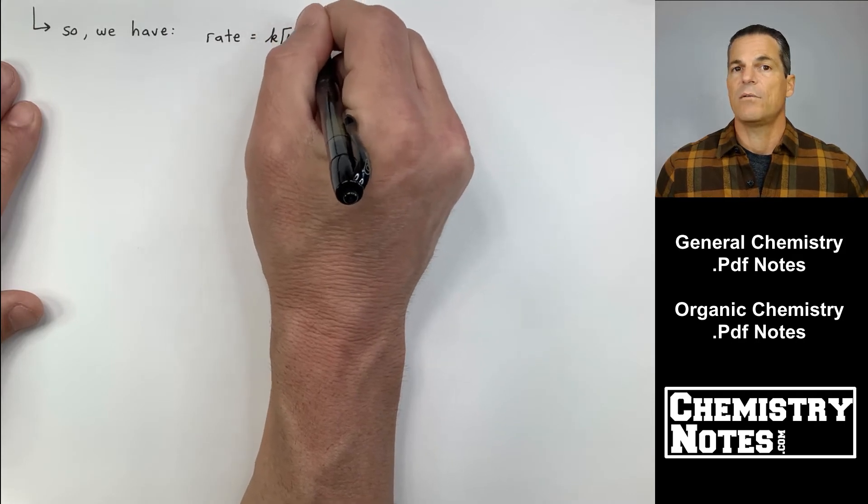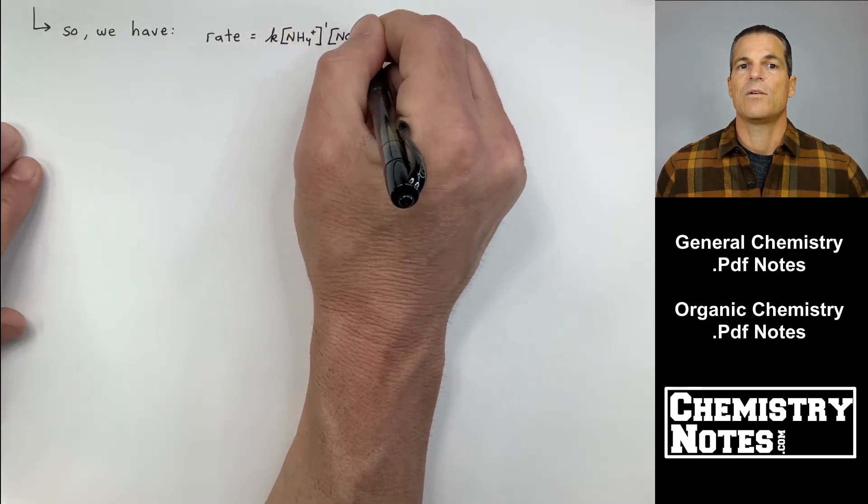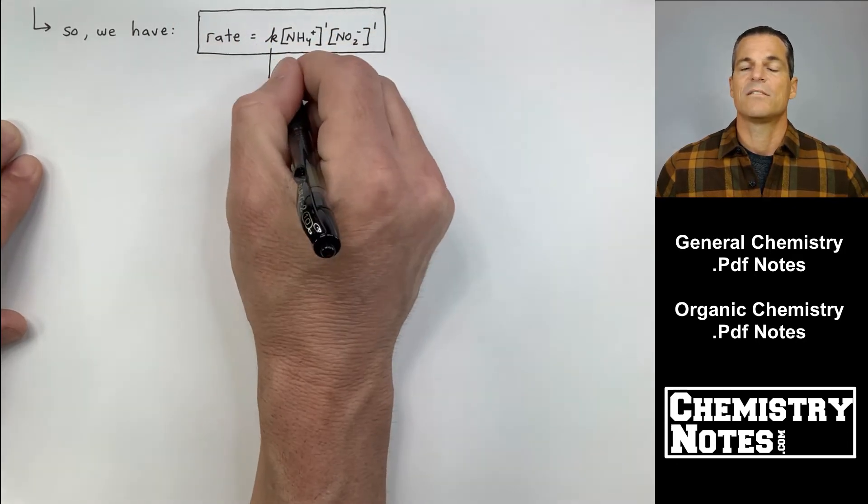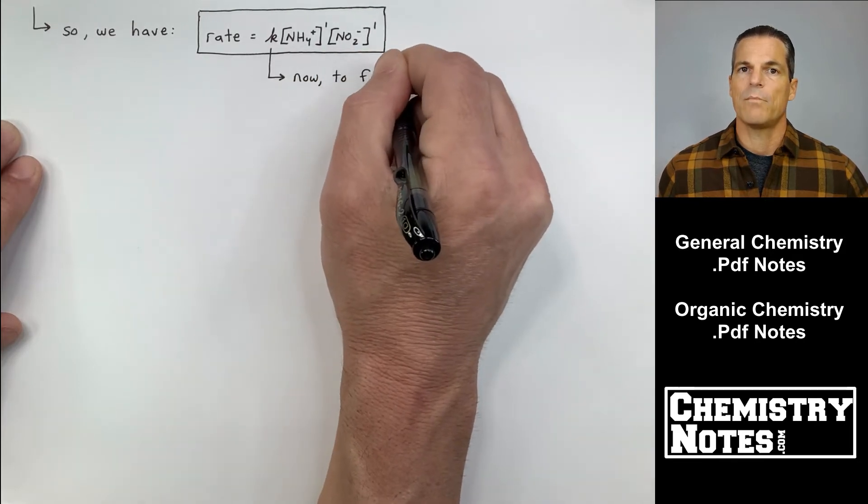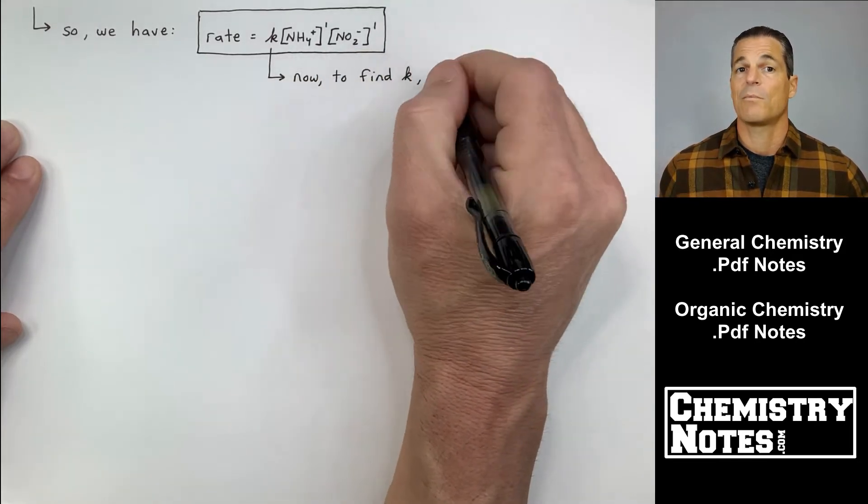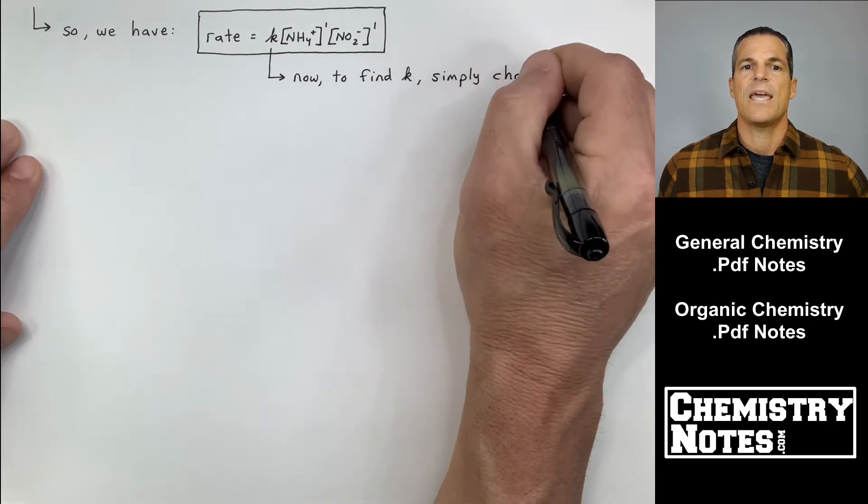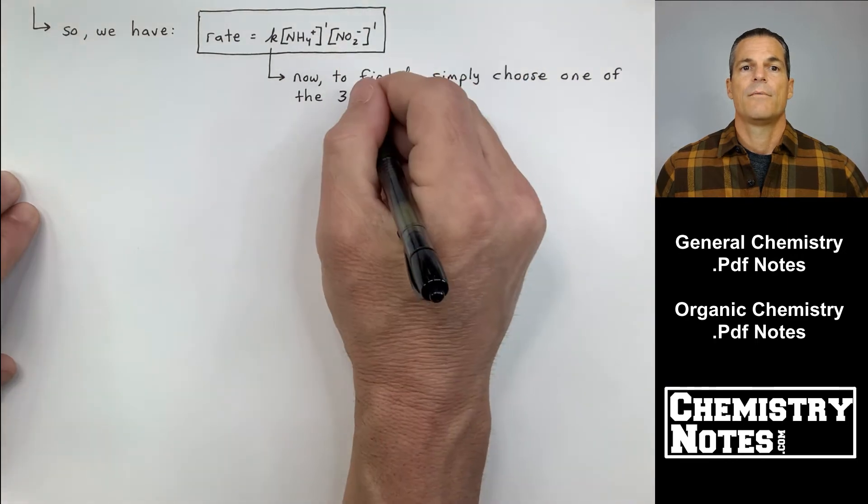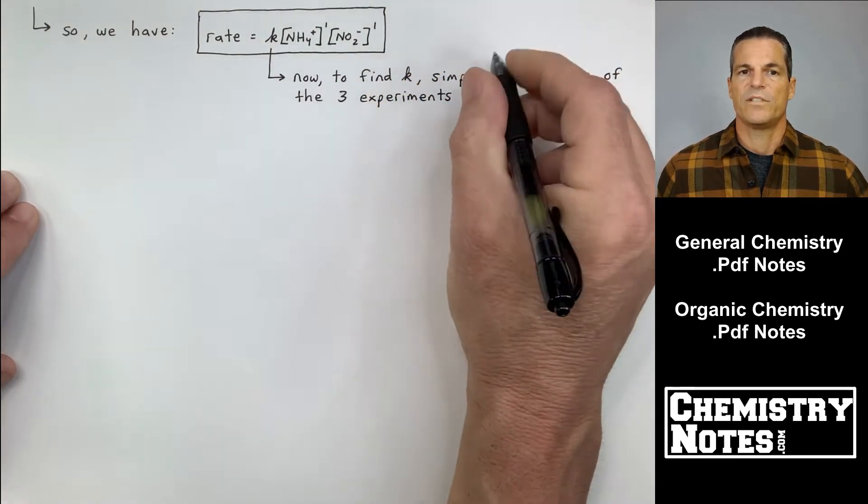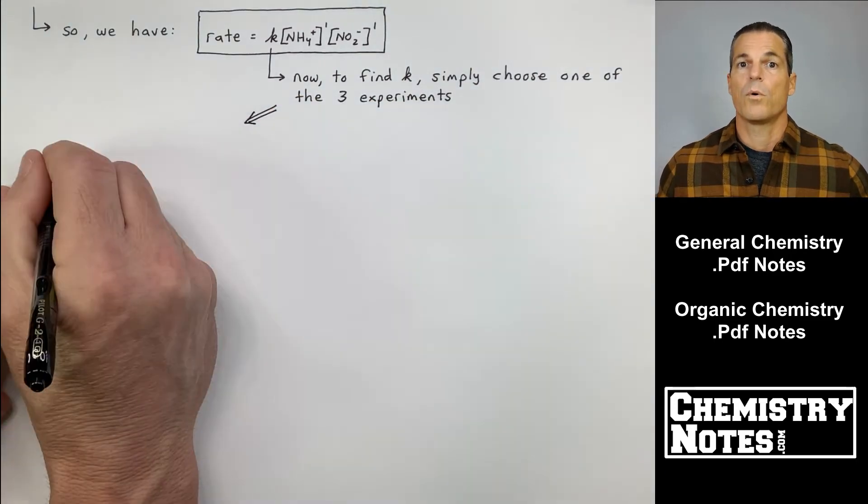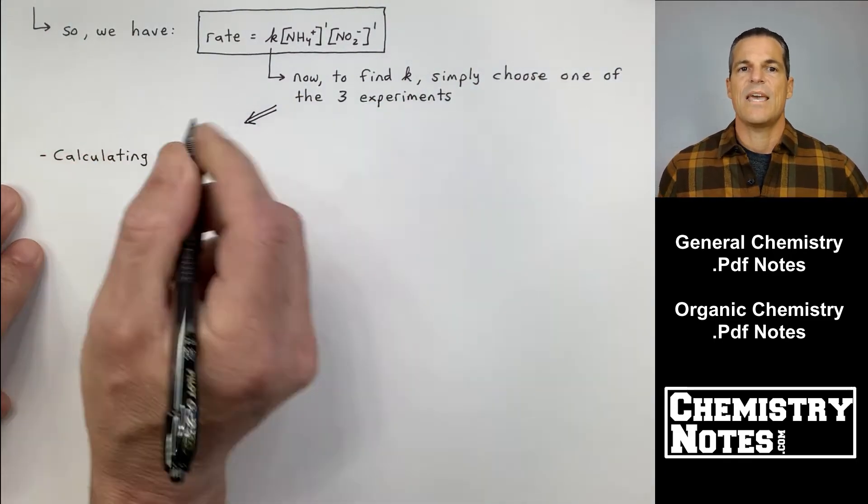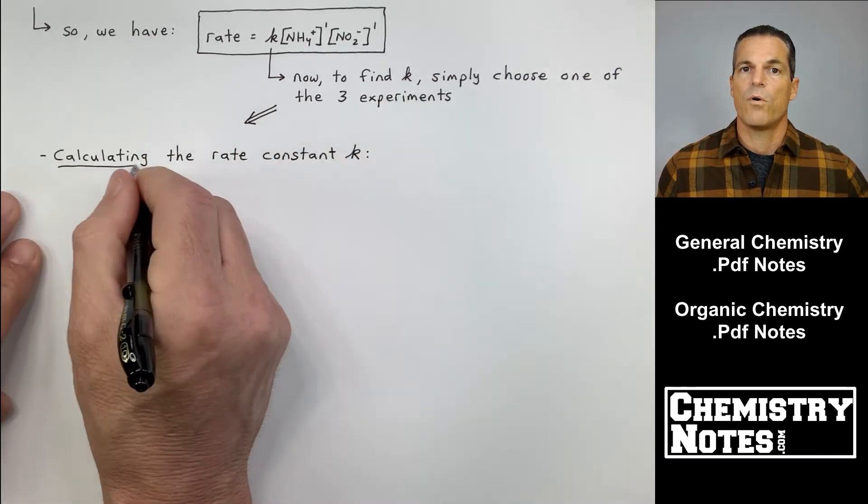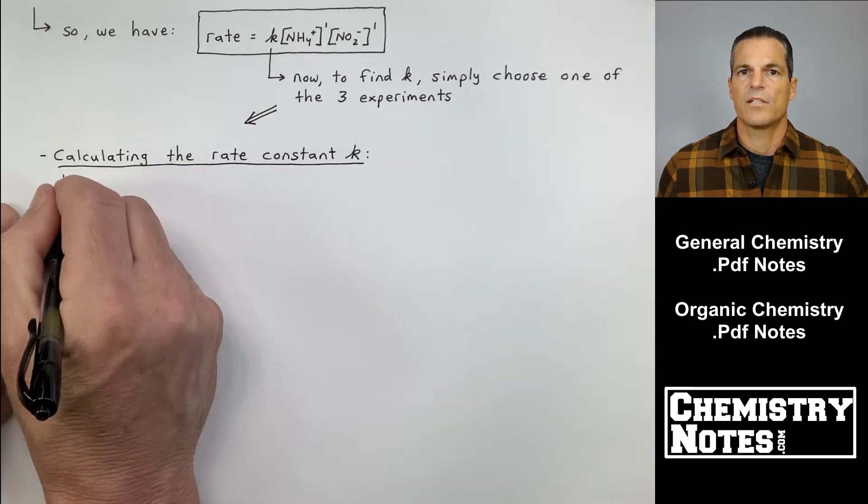Let's plug them in. Our rate law now is: the rate equals K times NH4+ to the 1 power times NO2- to the 1 power. If it's a 1, I could have left it out, but since this is the first time we're going through this, I'm going to put the little 1s up there. Rate equals K times NH4+ times concentration of NO2-. Now, all that's left is to find K. We'll always leave rate as just the word rate. Rate equals K. I need to solve for K.